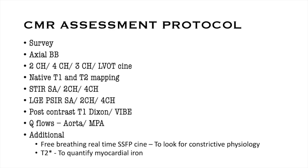The standard cardiac MR protocol consists of an anatomic survey and axial black blood of the chest to look at extracardiac structures. This is followed by standard imaging planes like the 2-chamber, 4-chamber, 3-chamber, and LVOT cine views. T1 and T2 mapping, when available, can really help in picking up subclinical disease. Edema imaging is done using STIR images in short axis, 2-chamber, and 4-chamber views. After gadolinium-based contrast, late gadolinium enhancement images are obtained using a PSIR sequence at 10–15 minutes post-contrast to look for myocardial scarring. Q-flow images of the aorta and MPA are used to determine flow and can help identify shunts.